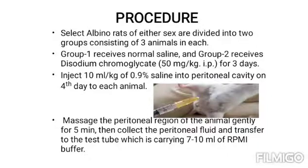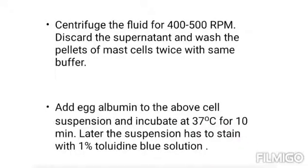Massage the peritoneal region for 5 minutes, then collect the peritoneal fluid. Centrifuge the fluid at 400-500 RPM. Discard the supernatant and wash the pellet of mast cells twice with the same buffer. Add egg albumin to the above cell suspension and incubate at 37 degrees Celsius for 10 minutes.